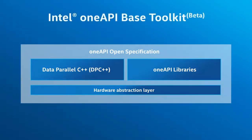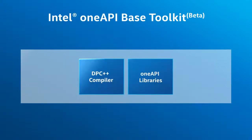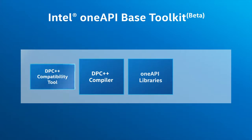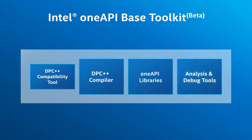Intel's OneAPI-based toolkit includes a Data Parallel C++ compiler, optimized libraries, a DPC++ compatibility tool to assist in migrating CUDA code to DPC++ code, and advanced analysis and debug tools. All together, the Intel OneAPI-based toolkit provides the foundational tools to efficiently build high-performance, cross-architecture applications.